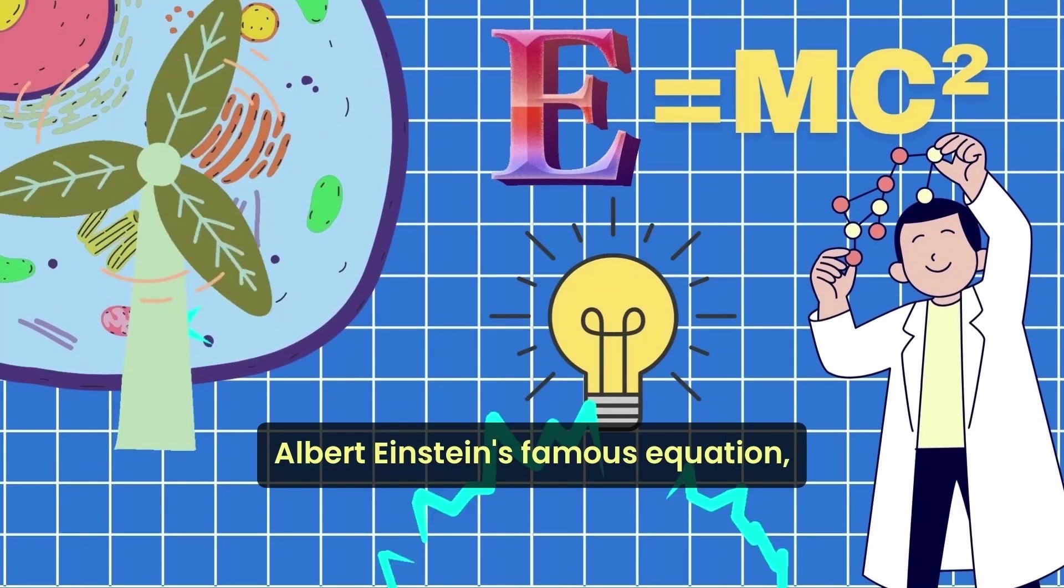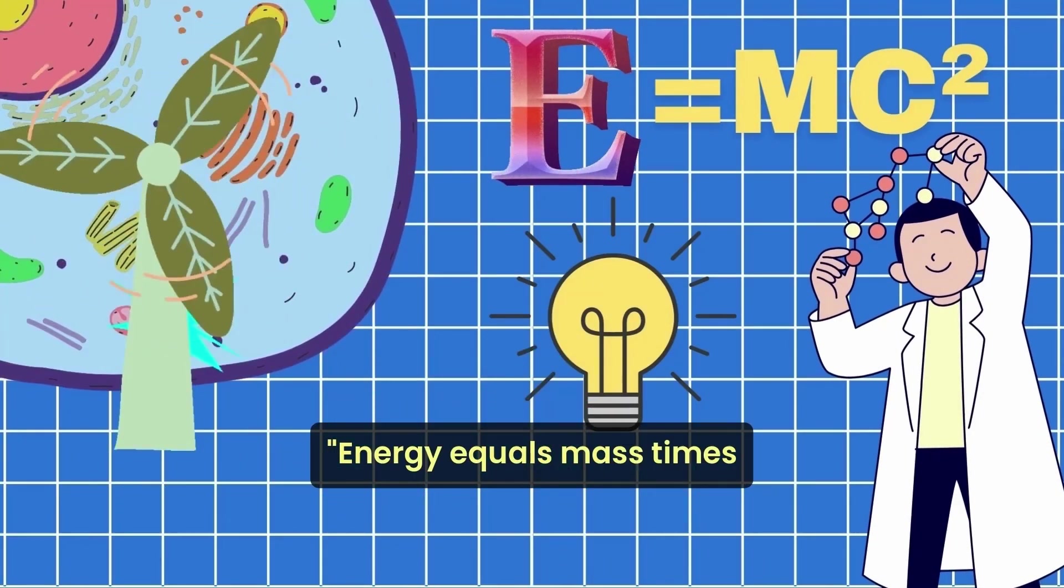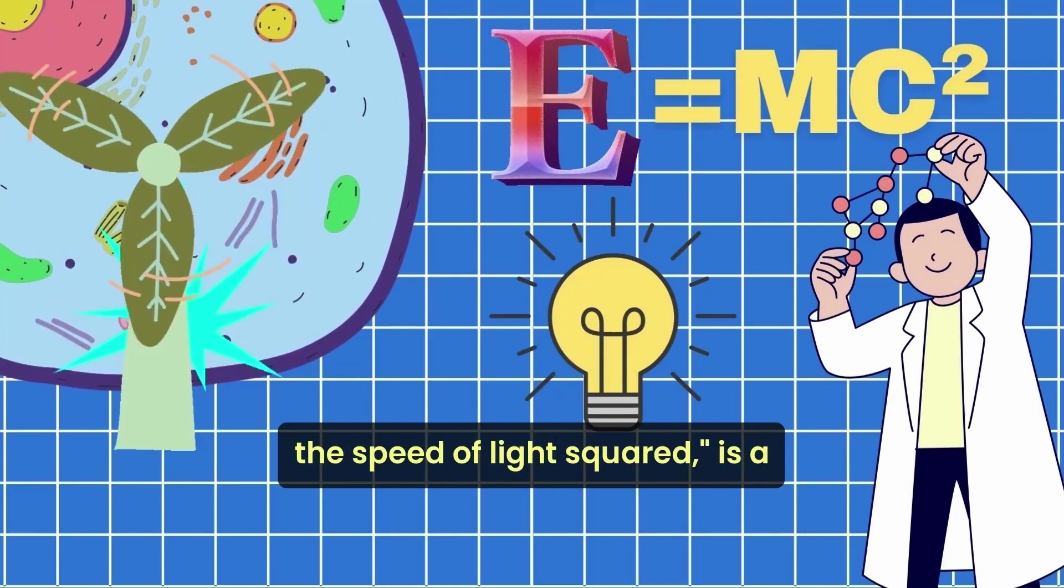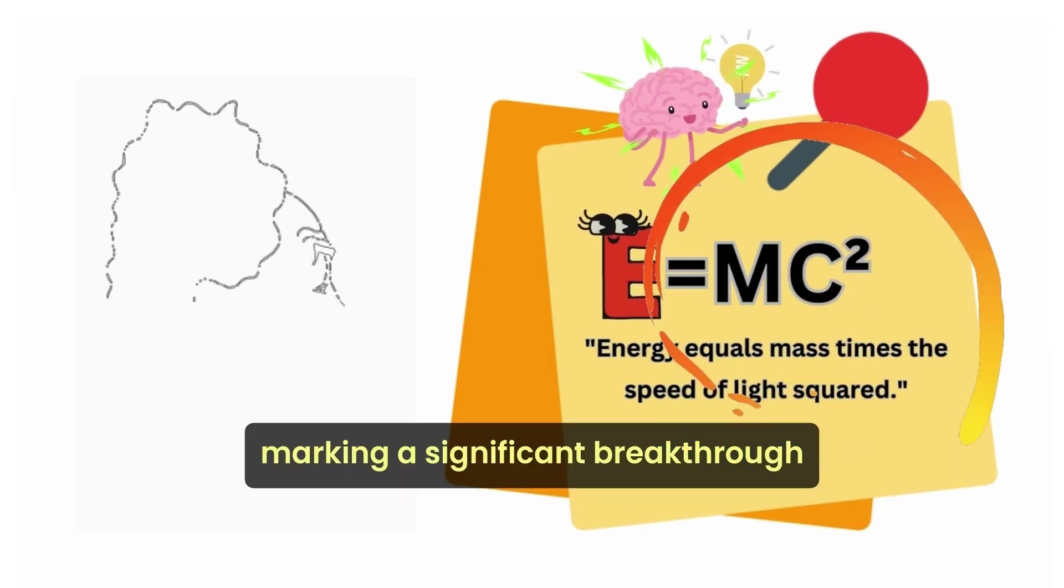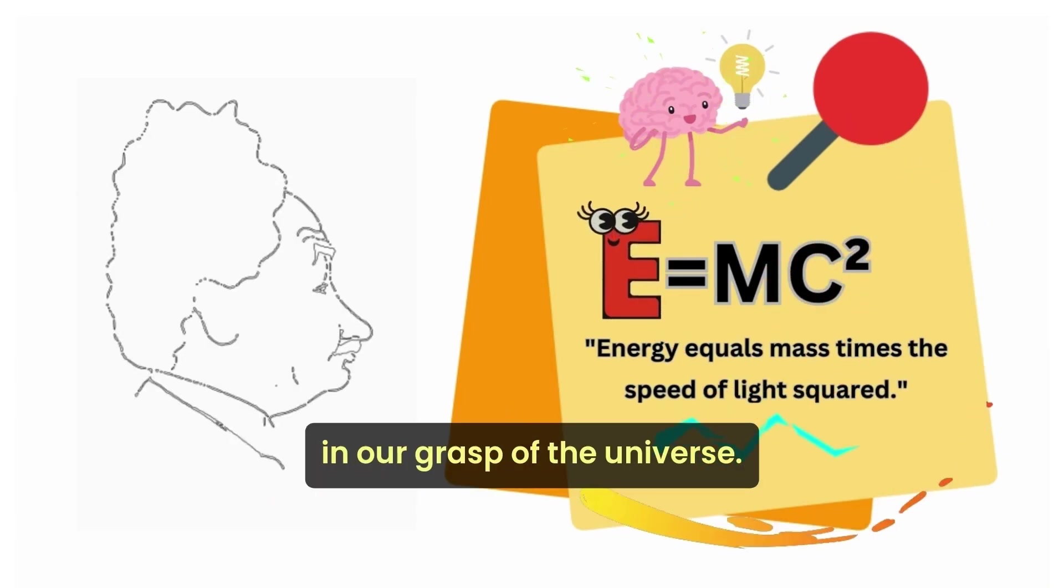Albert Einstein's famous equation, energy equals mass times the speed of light squared, is a fundamental pillar of modern physics, marking a significant breakthrough in our grasp of the universe.